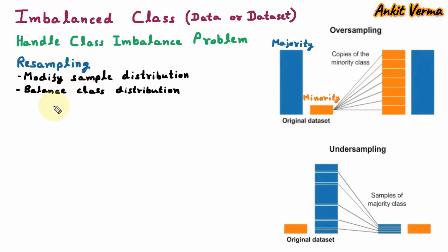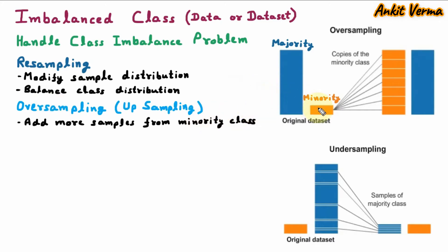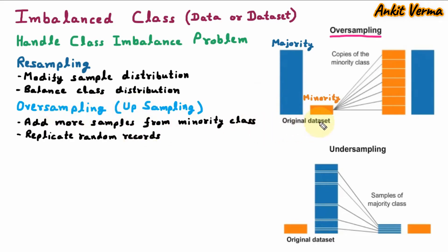There are two methods under resampling. The first one is oversampling, also called upsampling. Oversampling adds more samples from the minority class. Here in the diagram, we can see the original dataset where we have less data in minority and more data in majority. In the minority class, more samples are added and increased so that class 1 and class 2 can be balanced. Oversampling replicates random records — records from the minority class are randomly taken and replicated so that it can be balanced with the other class.